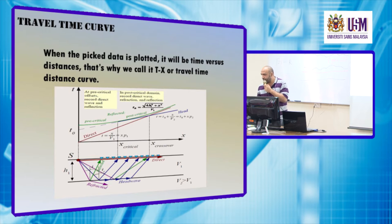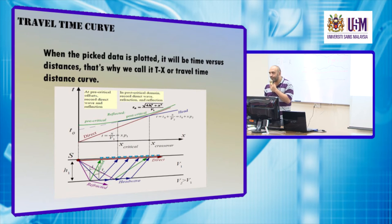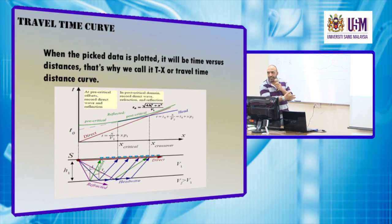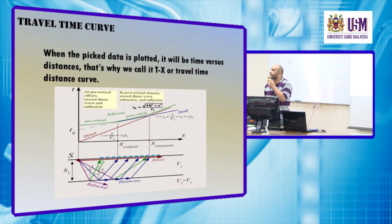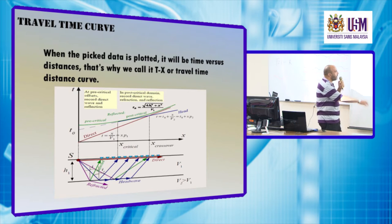What is slope? So we know the slope — we have a line and we want to determine its slope. How do we determine the slope of this line?